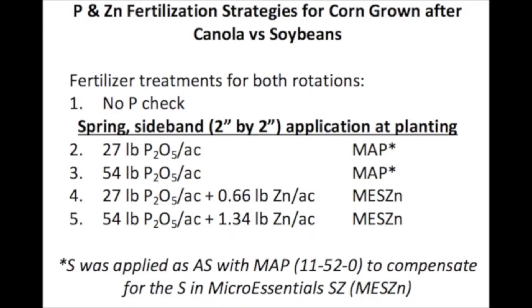So you're looking at different phosphate treatments to compensate for that? Yes, specifically we're looking at starter phosphorus in the canola-soybean study. We're applying starter phosphorus at the beginning of the season at planting. We are using two different products: we're using MicroEssentials MES-Z and we're using MAP. We also have a no-phosphorus control track.